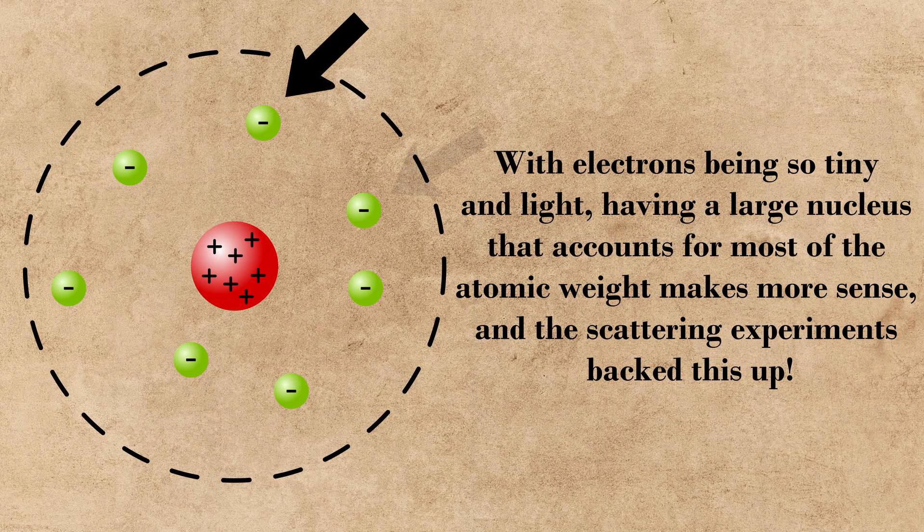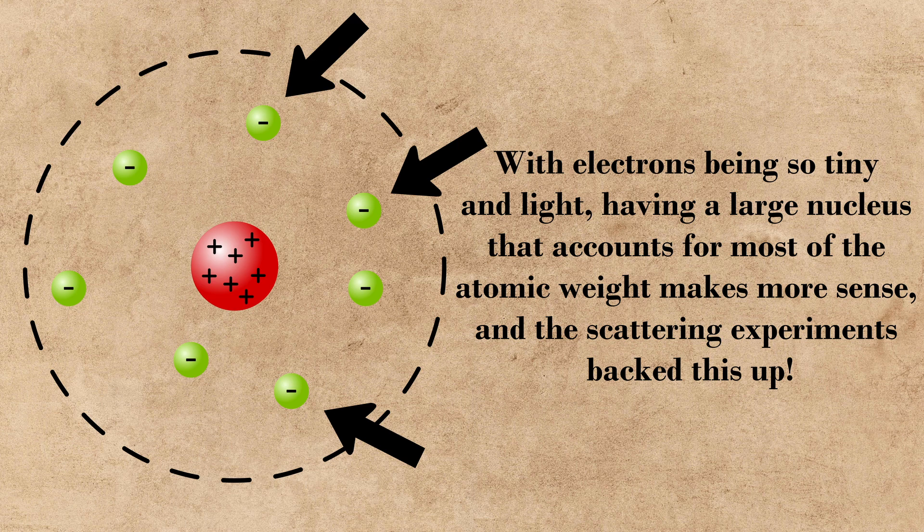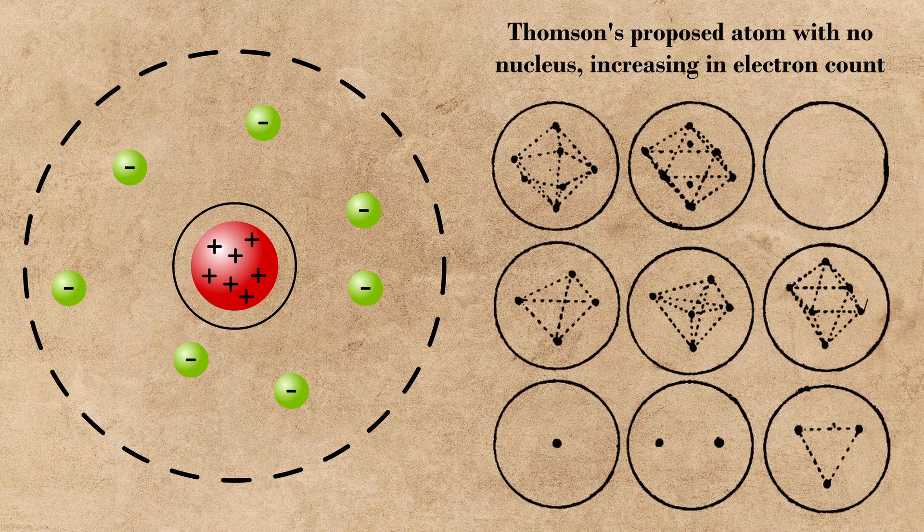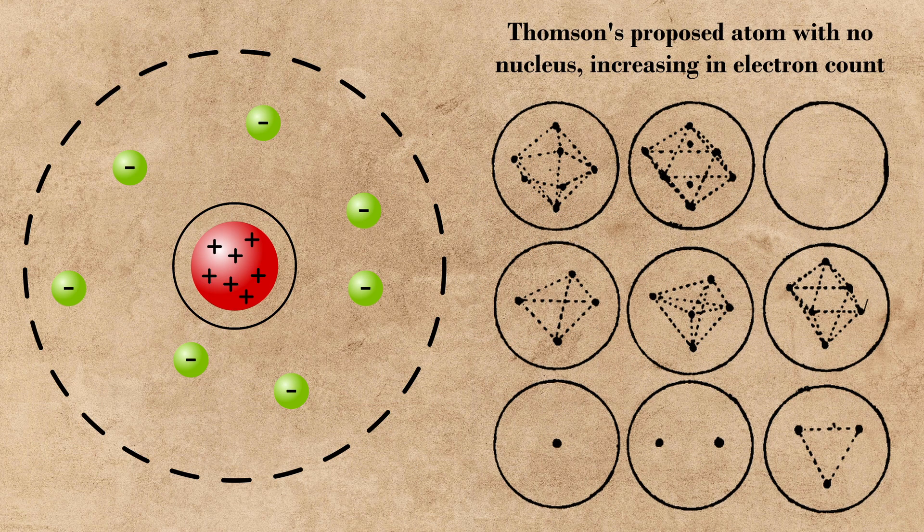Rutherford's model also had a much more intuitive reasoning for the atomic weights of atoms, stating that the majority of the mass in an atom was composed of the nucleus, as opposed to potentially thousands of electrons based on the plum pudding model.